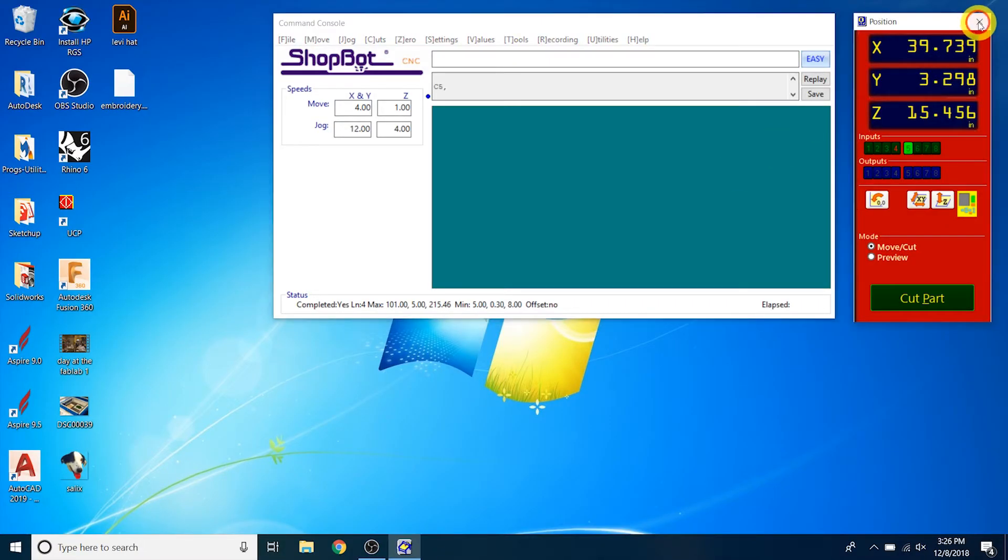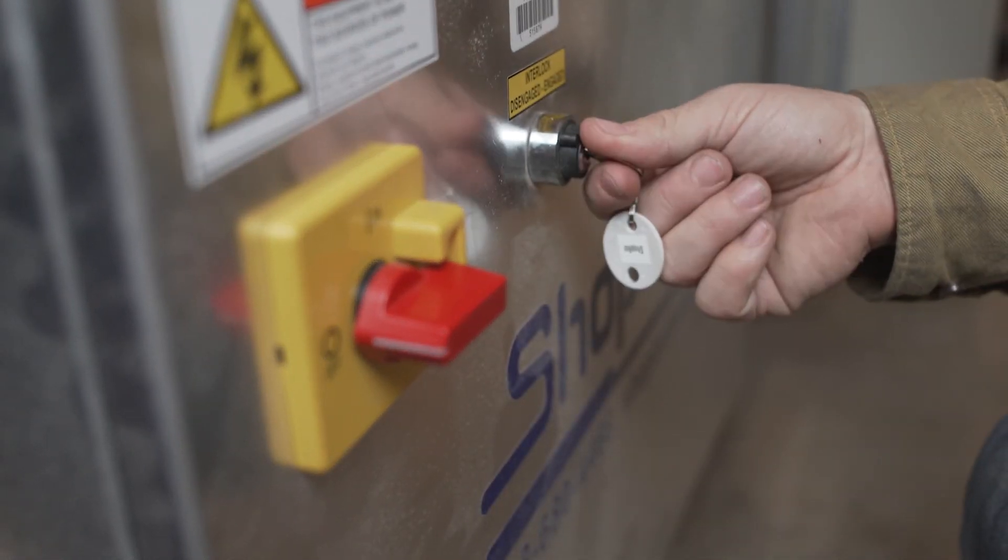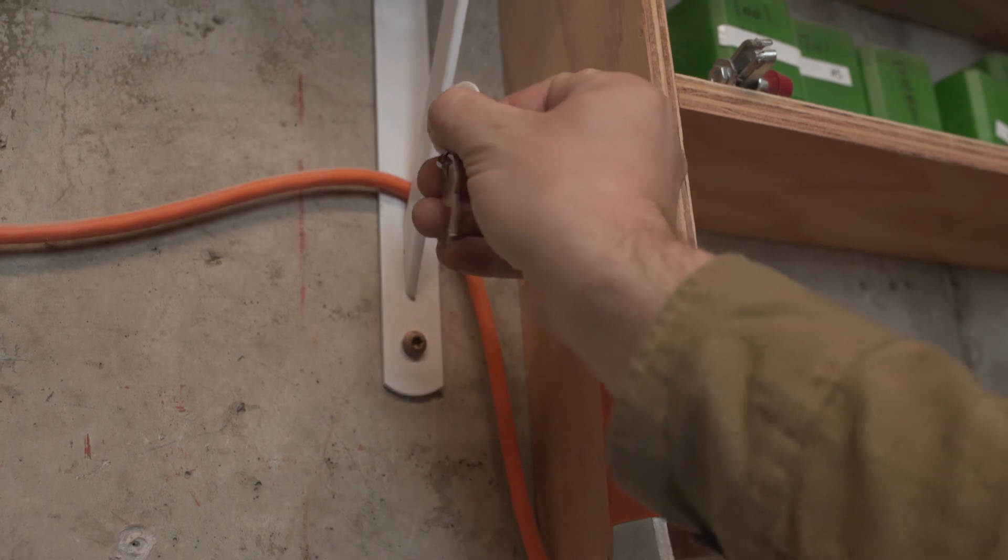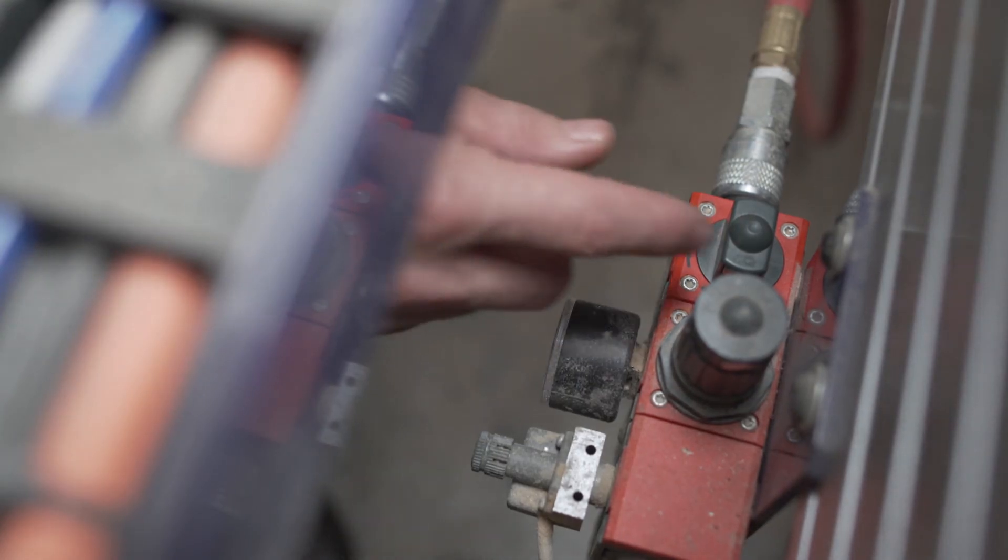Now turn off the control software, disengage and remove the spindle interlock key, and turn off the control box. Place the key back on the hook. Close the valve on the main air assembly.